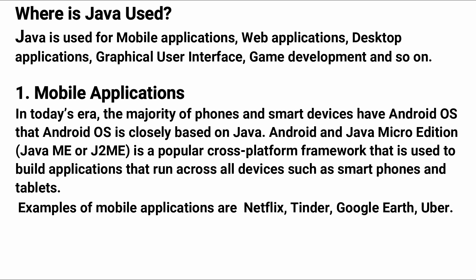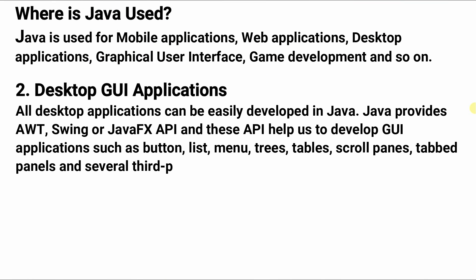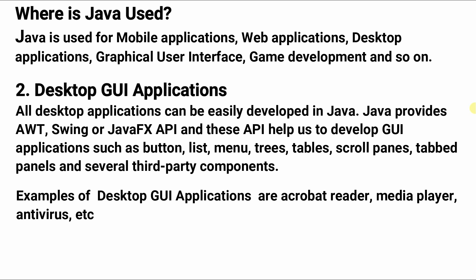Now let's move on to desktop graphical user interface applications. All desktop applications can be easily developed in Java. Java provides AWT, Swing, or JavaFX API, and these APIs help us develop graphical user interface components such as buttons, lists, menus, trees, tables, scroll panes, top panels, and several third-party components. Examples of desktop GUI applications are Acrobat Reader, Media Player, Antivirus, etc. I will make a separate video on AWT, Swing, and JavaFX, so just keep watching the YouTube channel.